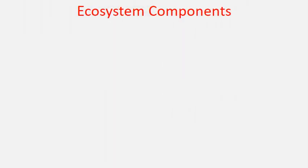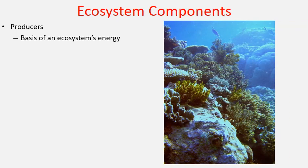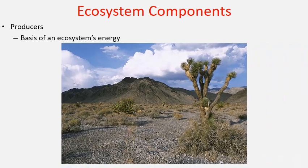To begin our discussion, we should talk about the components of an ecosystem. Let's start with the producers, as they form the basis of the energy within an ecosystem. This coral reef is powered by photosynthetic corals, this wetland by photosynthetic plants, and this desert is also powered by photosynthetic plants.